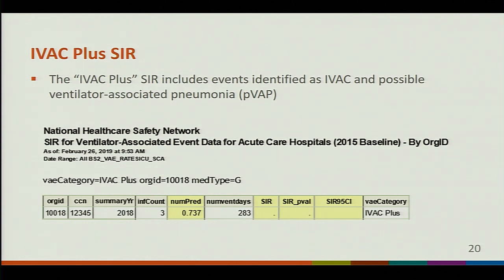Here is the IVAC Plus SIR output. It's very similar to the total VAE output, with the only difference being the VAE category, which identifies this as IVAC Plus. As you can see, since the number predicted is less than one, there is no SIR, no p-value, and no 95% confidence interval.